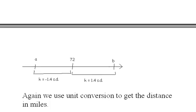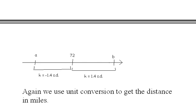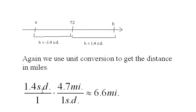Again we use unit conversion to get the distance in miles. I know it's 1.4 standard deviations and I know that for one standard deviation is 4.7 miles. So I set it up this way so standard deviations cancel and I end up with 1.4 times 4.7 which is about 6.6 miles.